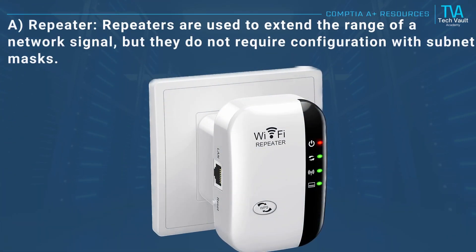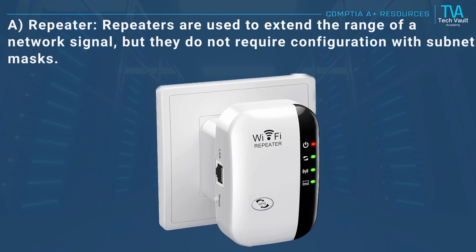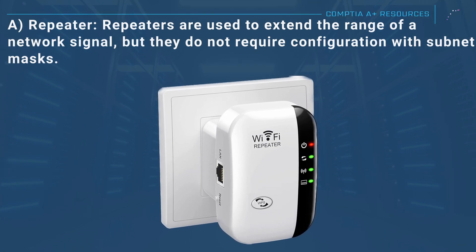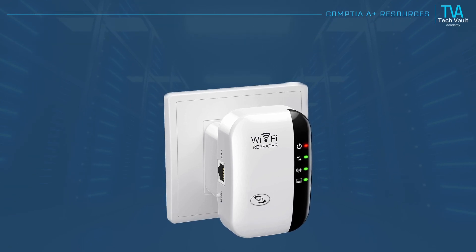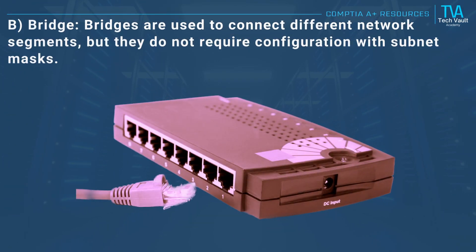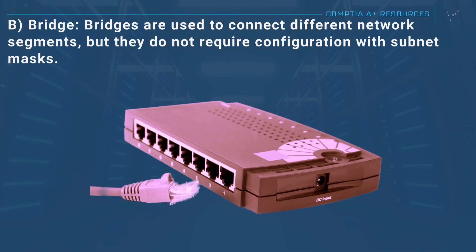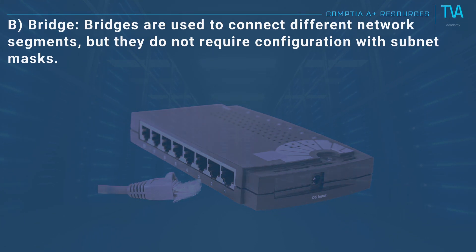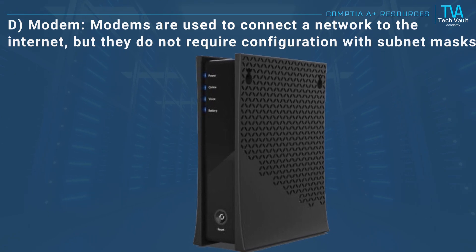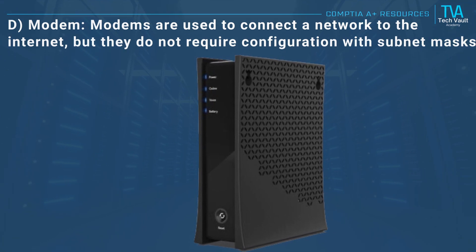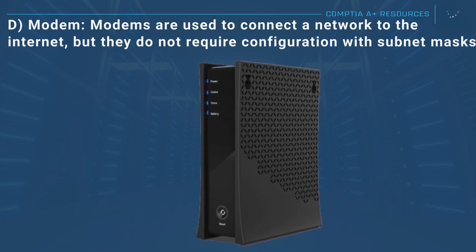A, repeater: repeaters are used to extend the range of a network signal but do not require configuration with subnet masks. B, bridge: bridges are used to connect different network segments but do not require configuration with subnet masks. D, modem: modems are used to connect a network to the internet but do not require configuration with subnet masks.